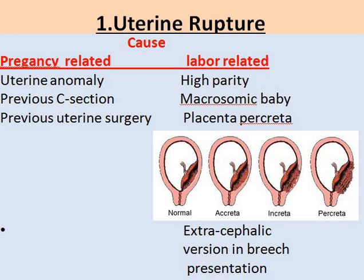Pregnancy-related causes include uterine anomaly, which can be genetic or acquired. Genetic causes include the bicornuate uterus or uterine septa. The acquired cause is fibroids of the uterus — whenever such fibroids are removed, it leads to weakness of the uterus, which can easily lead to rupture upon gestation or during labor. Similarly, previous C-section or other uterine surgeries also result in weakness of the uterus.